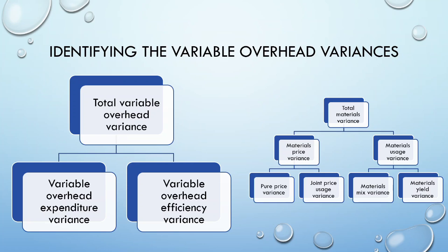While we can calculate a joint expenditure efficiency variance, we need to consider whether it will be useful. For variable overheads, it is unlikely to be useful. Remember, the joint price usage variance for materials and labor is useful for performance management when different departments are responsible for the different elements. For variable overheads, however, the production department will be responsible for both efficiency and expenditure, so we will not calculate a joint expenditure efficiency variance. It is also highly unlikely that we will have a mix and yield variance, as overheads are generally not interchangeable between rates or departments.